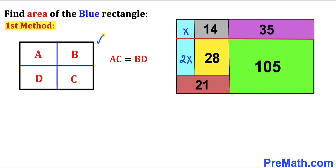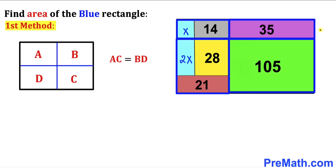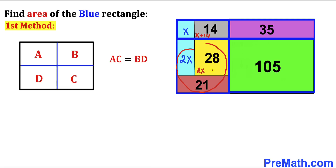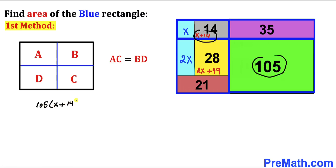Now we are going to apply this concept on this diagram. I have divided the big rectangle into four rectangles. The total area for this whole rectangle is X plus 14, and the area for this whole rectangle is 2X plus 49, since 21 plus 28 equals 49. Cross-multiplying: 105 times (X + 14) equals 35 times (2X + 49).